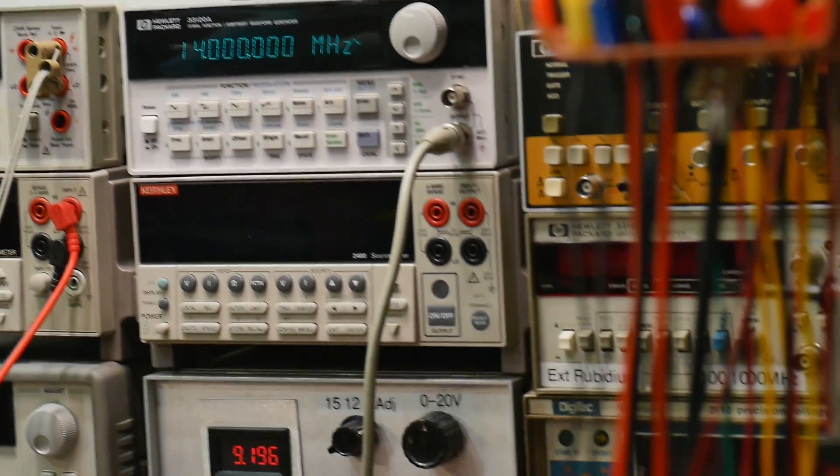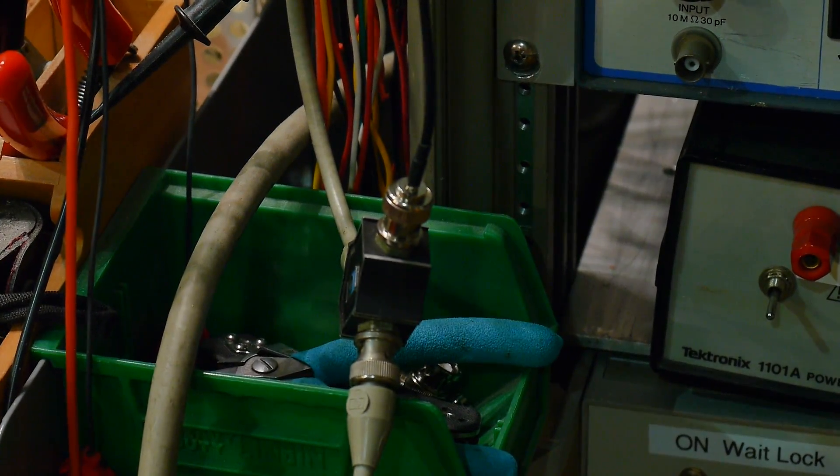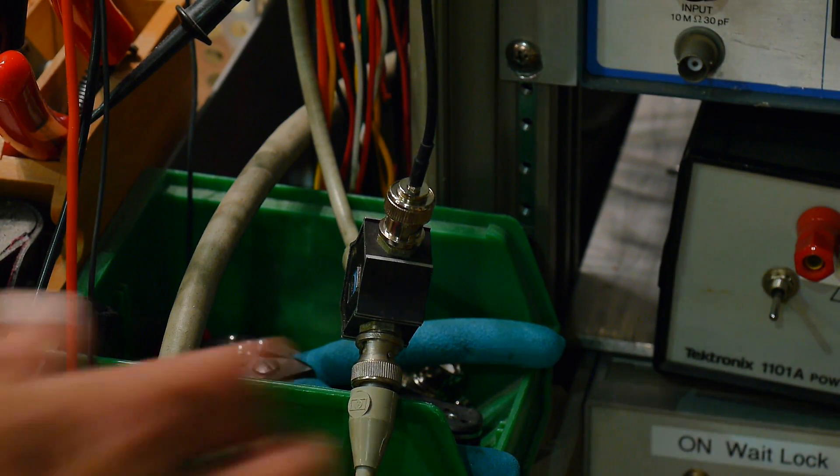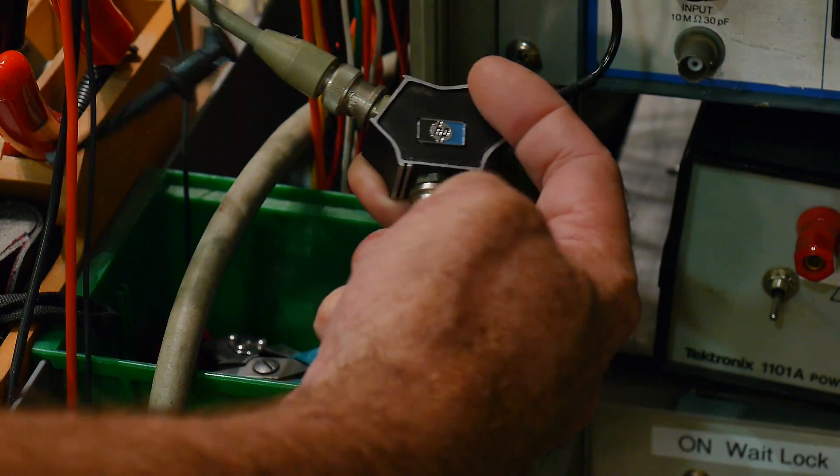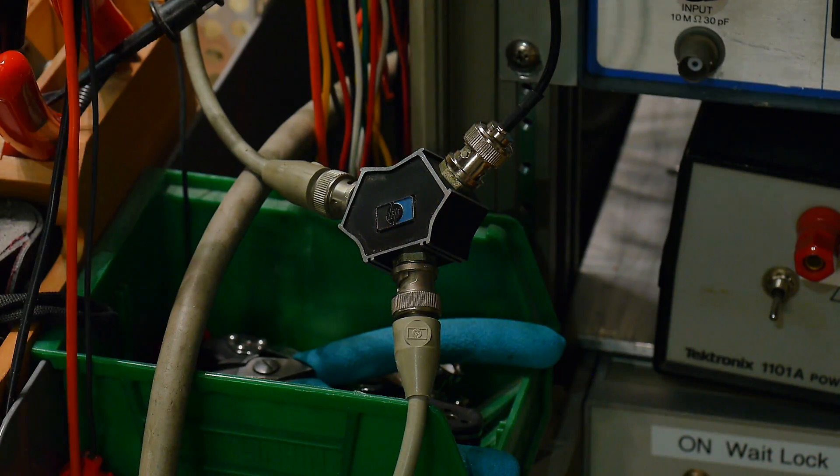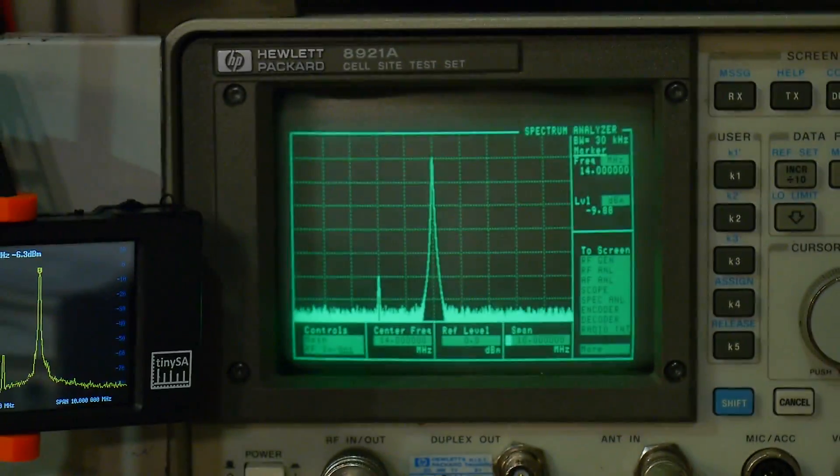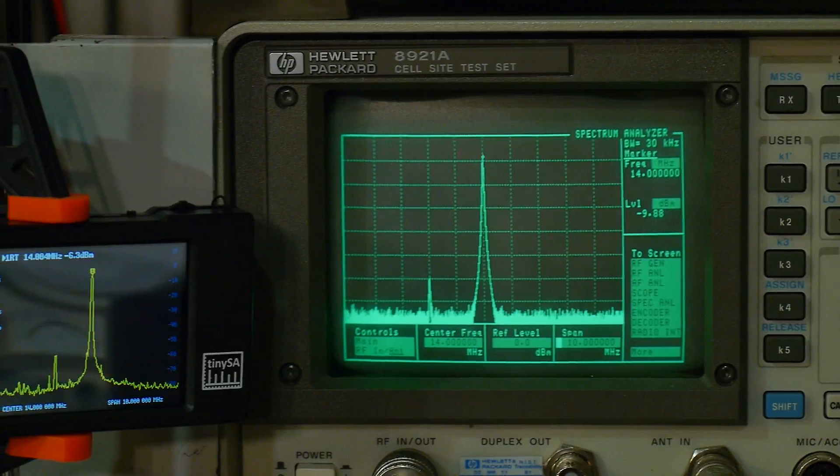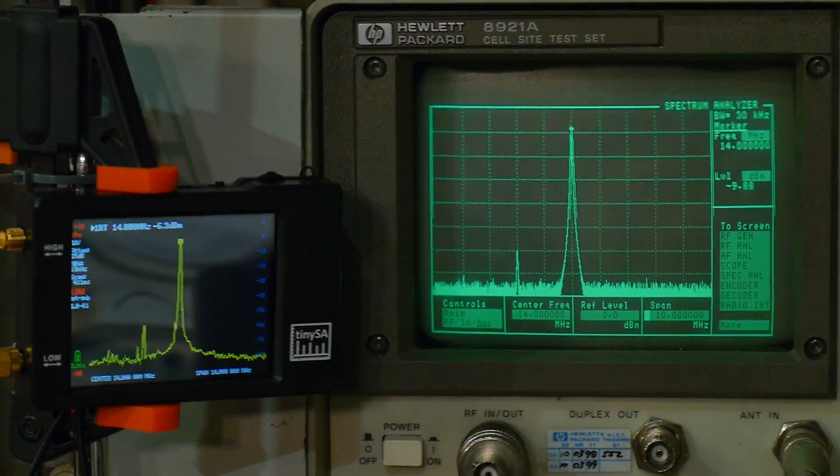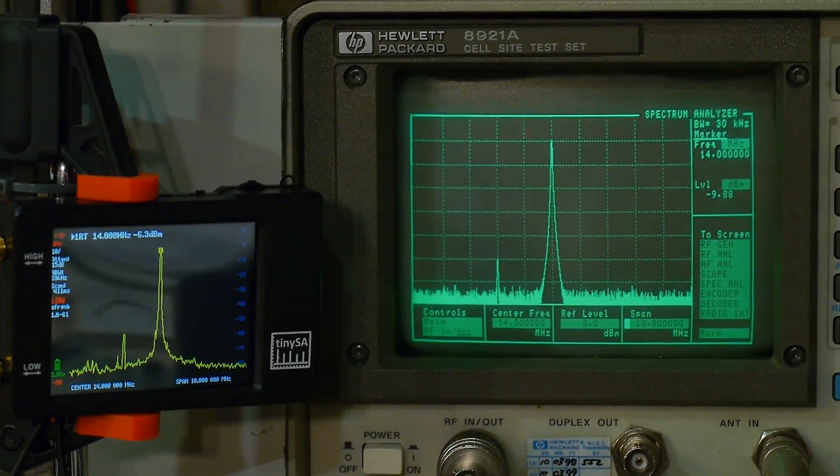The cable comes down over to a splitter. Here's the splitter, let me make it into focus. This is a HP power splitter so the signal's coming in, it's getting split two ways equally. One side is going to go to the TinySA and one side is going to go to the 8921A. Let's get everything in screen here.